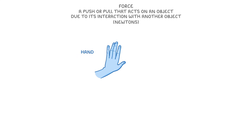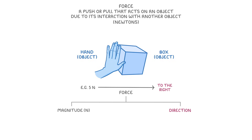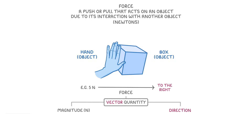For example, when a hand, which is one object, pushes a box, which is another object, it exerts a force, like 5 newtons. As well as this magnitude, which we're measuring in newtons, forces also have direction. So we could say that this force is acting to the right. This means that forces are vector quantities, because they have both magnitude and direction.